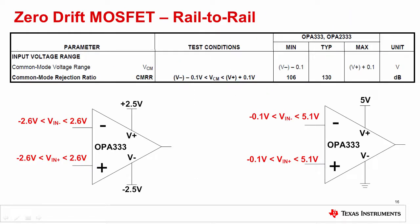The final input topology we'll cover is zero drift. Zero drift amplifiers use a digital calibration method to greatly reduce VOS and VOS drift, the details of which will be discussed in a later video. The OPA333 is an example of a zero drift rail-to-rail amplifier. Keep in mind that all zero drift amplifiers do not necessarily have rail-to-rail inputs.